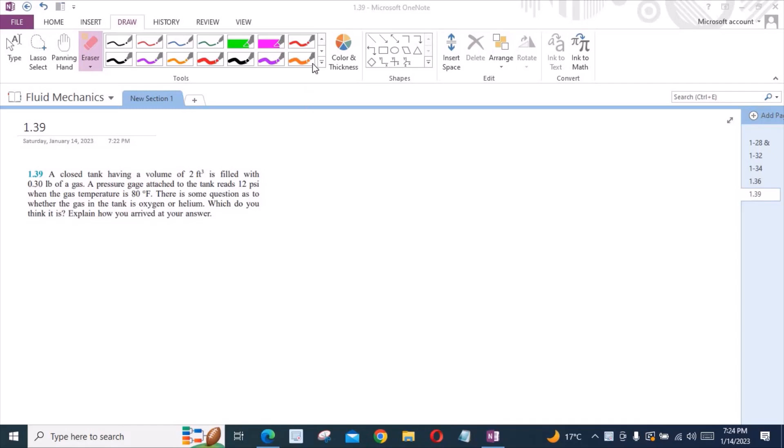So to solve this problem, first of all let's write what has been given to us. We have been given the volume of the gas which is 2 ft³. We know the weight of the gas which is 0.30 lb and we know the gauge pressure which is 12 psi.